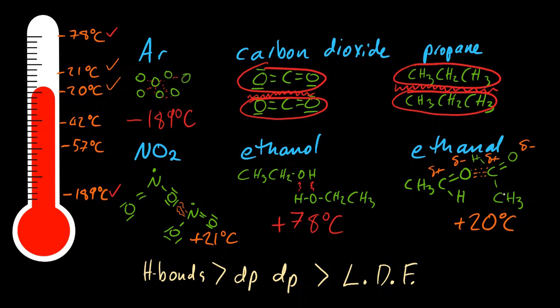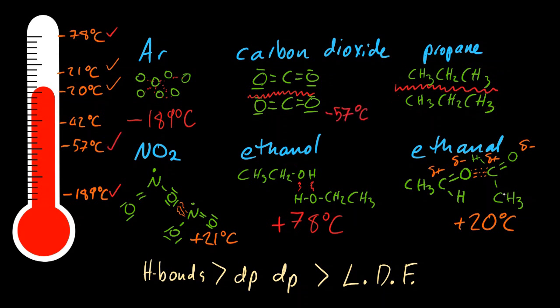And carbon dioxide and propane are the missing two. Their sausage-y shape gives them more London dispersion forces and a slightly higher boiling point.